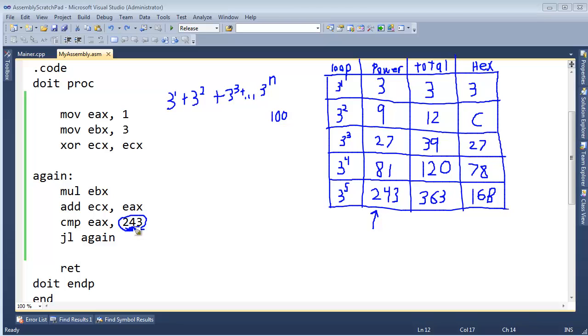So in order to change my stopping condition, or terminating condition as we call it in computer science, I have to figure out what 3 to the 100 is and type that in there. And I'll give you a hint—3 to the 100 is a really big number, and we get a compile error.